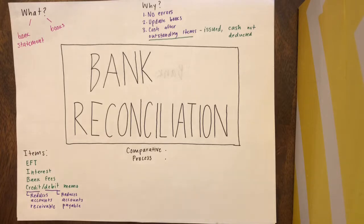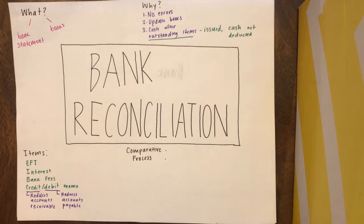For a credit memo, it is added to the accounting records and cash is debited while interest revenue or interest income is credited — that is when interest is added. Those are two examples of debit and credit memos.